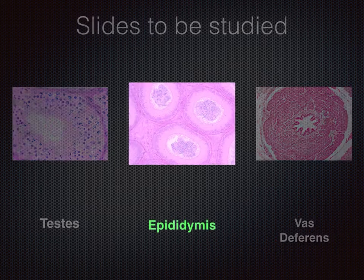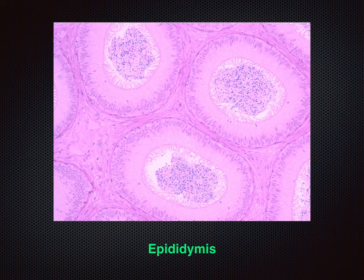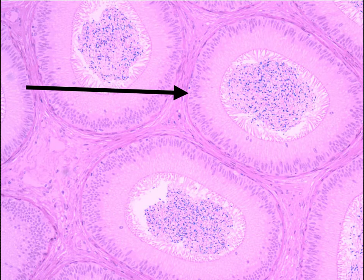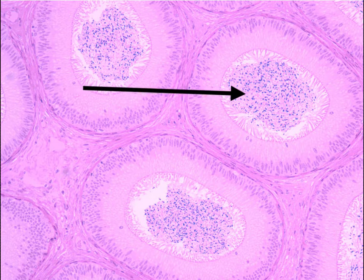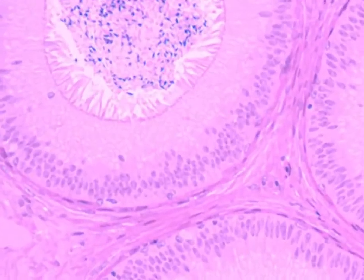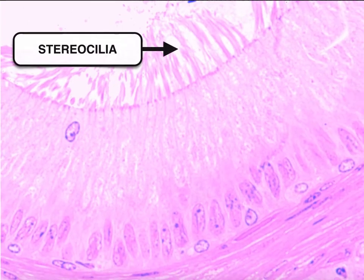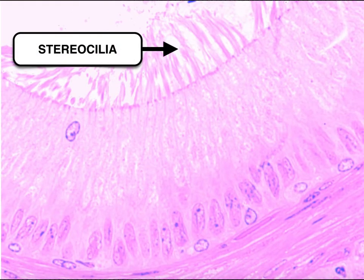Our next slide is the epididymis. Each epididymis is formed by a single convoluted tubule, seen in multiple cross sections as shown by the arrow. In this section, spermatozoa can be seen in the lumen throughout the epididymis. Let's now shift to higher magnification to view the stereocilia. These cells bear stereocilia on their luminal surface as shown by the arrow. The stereocilia absorb fluid released from the testis along with the sperm.